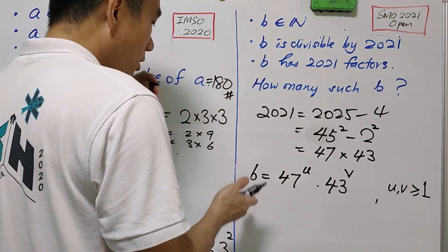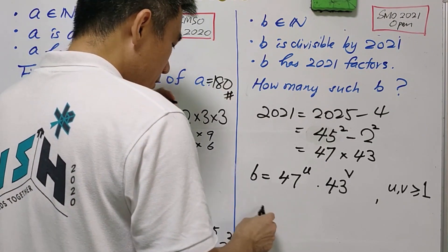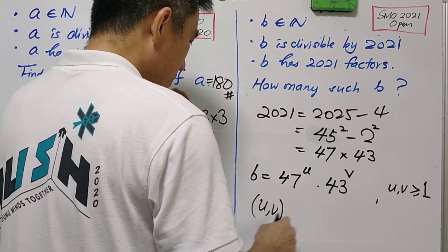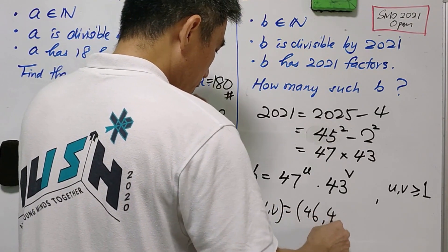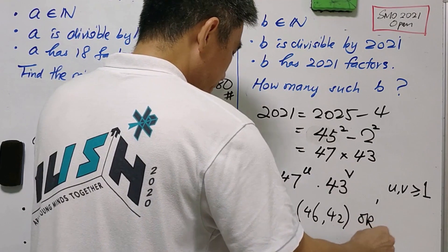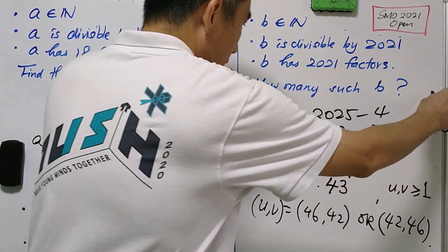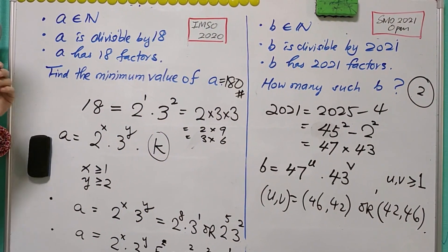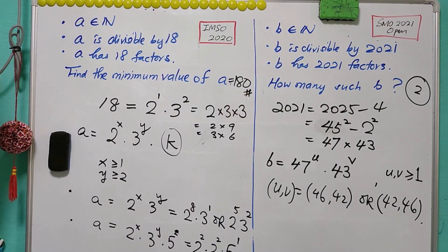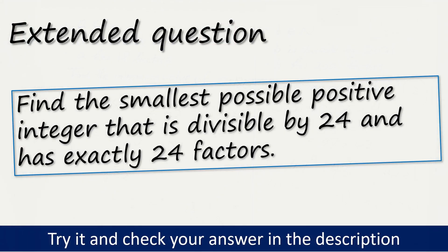In order for B to have 2021 factors, we need (U + 1)(V + 1) = 2021 = 43 × 47. So the value of (U, V) is either (46, 42) or (42, 46). Therefore, the answer is 2. Based on this method, you may try the extended question as shown — please give it a try and check the answer in the description.